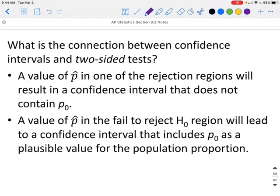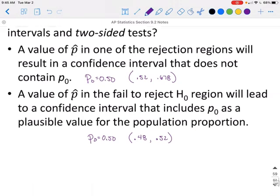A value of P hat in the fail to reject H sub 0 region will lead to a confidence interval that includes P sub 0. So basically, in that last one, our P sub 0 was 50%, so if our confidence interval does not contain it—like 0.522 to 0.678—since 0.50 is not in there, we can reject the null hypothesis. But if our null hypothesis is 50% and we go from, say, 0.48 to 0.52, then that 50% is in that interval, so we would fail to reject the null hypothesis.